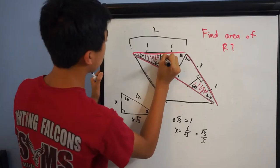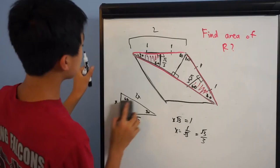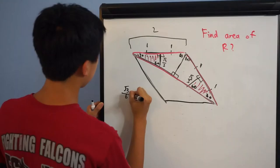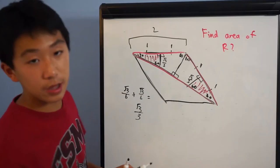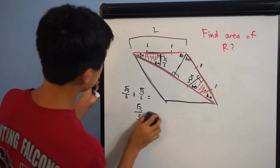So this side is √3/3, and since the two small triangles are congruent, this side is also √3/3. Now we have the base and height of each small triangle. The area of each small triangle is 1 × (√3/3) / 2, which equals √3/6. We have two of them, so √3/6 + √3/6 = √3/3. So the total area we're subtracting from the big triangle is √3/3.